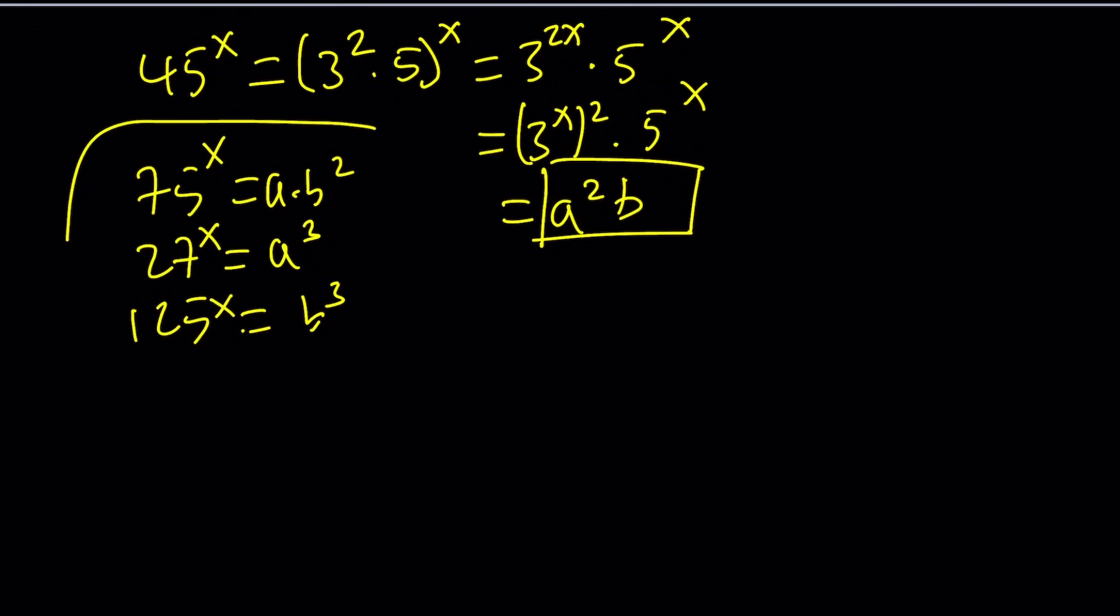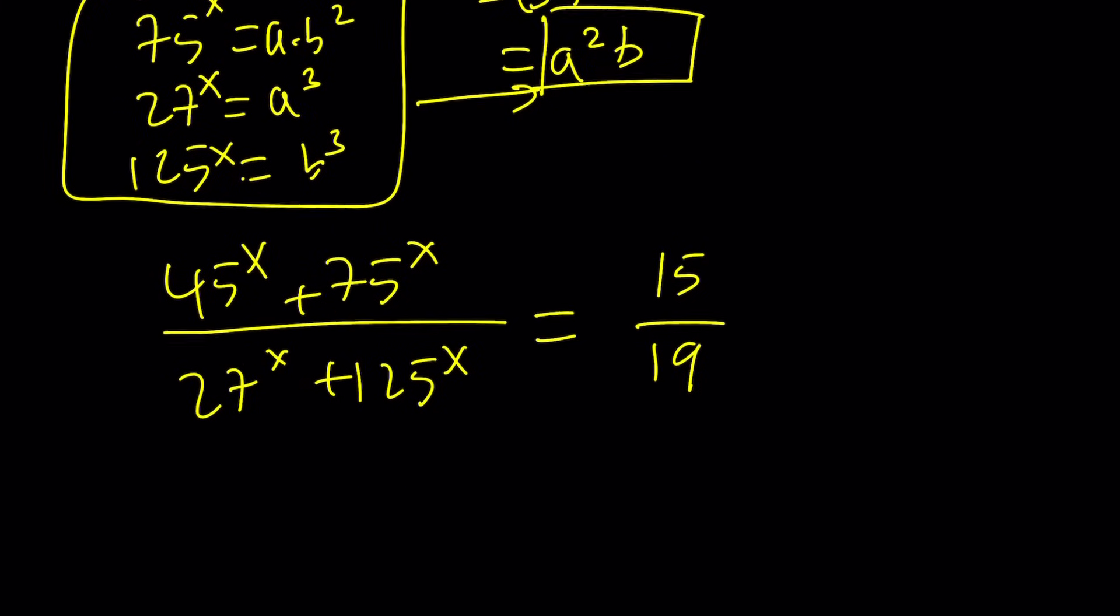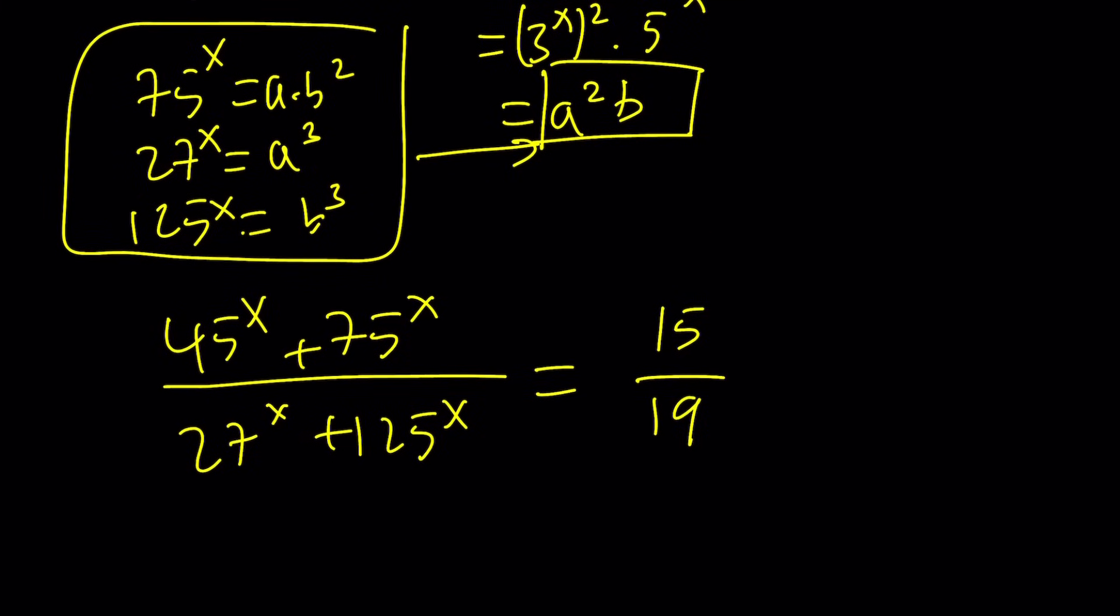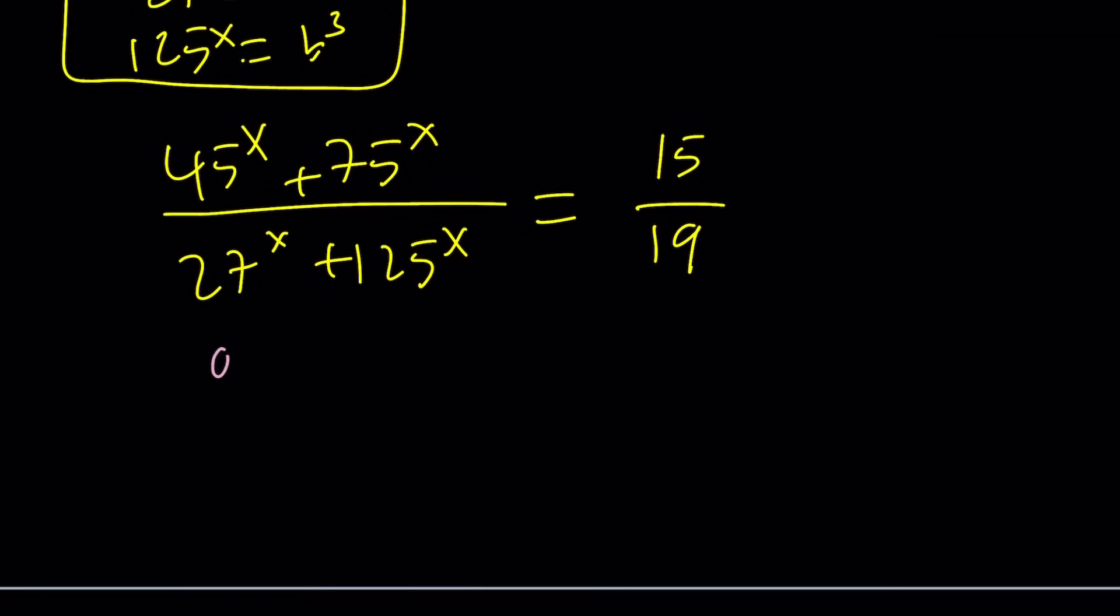Let's go ahead and put this into our equation. Our equation was 45 to the power x plus 75 to the power x divided by 27 to the x plus 125 to the x, and that's equal to 15 over 19. Let's make the substitutions. We're going to replace 45 to the x with a squared b, then 75 is going to be ab squared, and at the bottom, we're going to have a cubed plus b cubed, which should remind you of sum of two cubes.